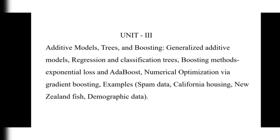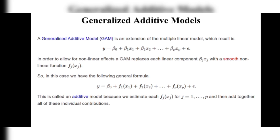The first topic is Generalized Additive Models (GAM). A generalized additive model, also known as GAM, is an extension of the multiple linear model which we learned in Unit 1. The formula for GAM is: y = β₀ + β₁x₁ + β₂x₂ + ... + βₚxₚ + ε.